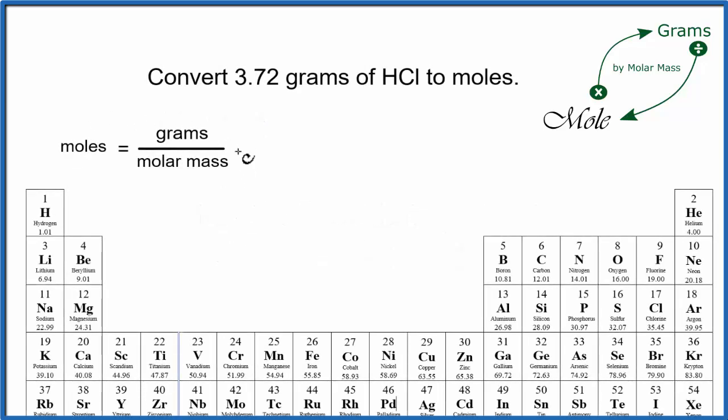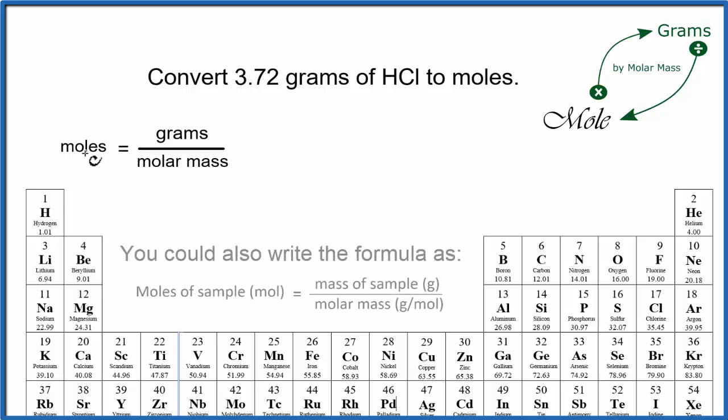Some people like to use a formula to convert from grams to moles and moles to grams. So you could use this formula. Let's try it out. We have moles equals grams over molar mass. So we have moles, our grams, 3.72 grams,